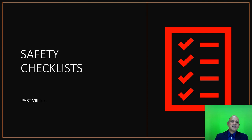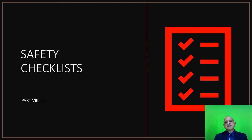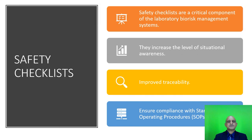Safety checklists are a very important component of any laboratory because they ensure situational awareness. For instance, if you are working in the laboratory on the workbench or biological safety cabinet and are accompanied by a colleague in a buddy system, your buddy is responsible for ensuring that you comply with the safety checklist. This is done from a safety perspective to ensure traceability of all operations. Safety checklists increase the level of situational awareness, improve traceability, and ensure compliance with standard operating procedures.